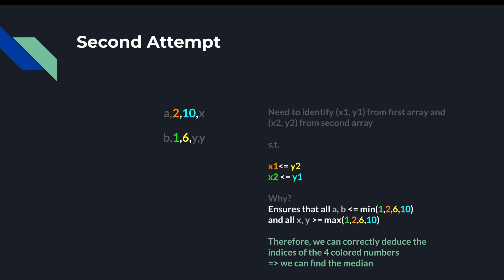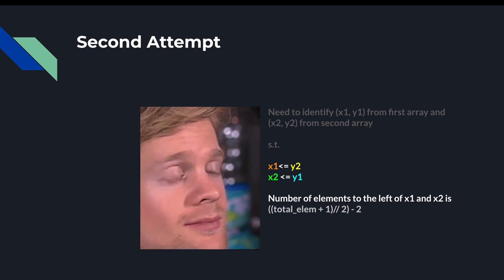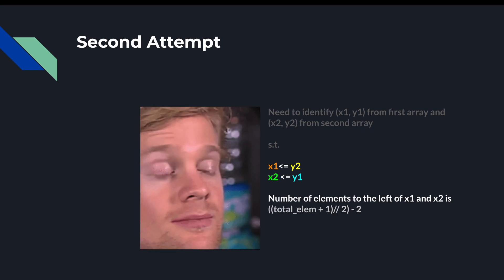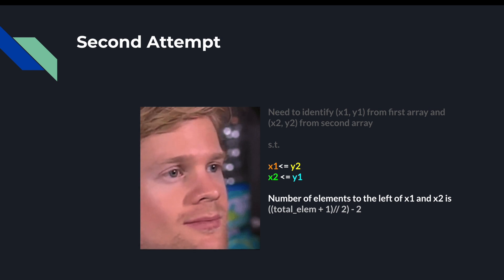Now we have one more key piece to this problem. Not only do we need to find elements where x1 ≤ y2 and x2 ≤ y1, but we also need to find such a pair where the number of elements to the left of x1 and x2 is equal to floor((N + 1) / 2) minus 2. This is the last piece of the puzzle we'll need to solve this problem.